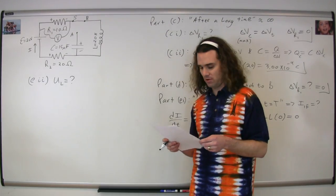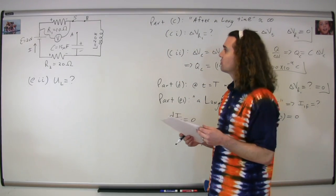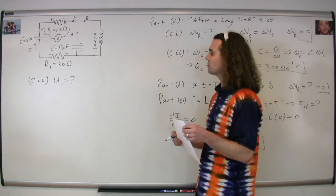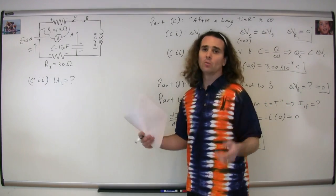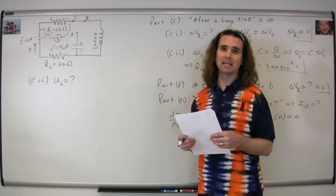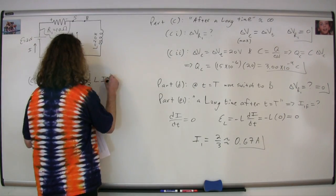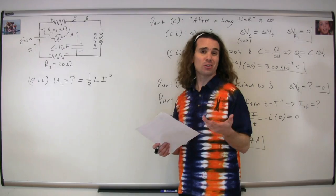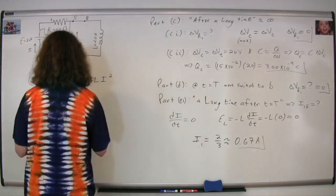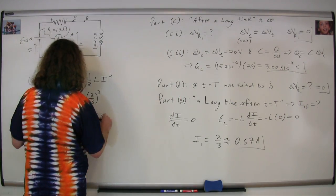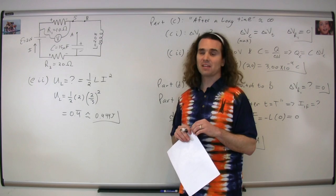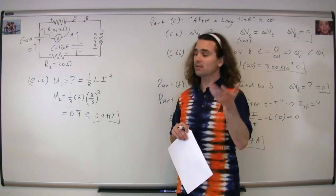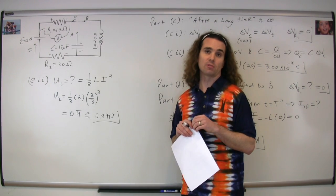Part E(ii): what is the energy stored in the inductor a very long time after we close the switch to position B? We use the equation for energy stored in an inductor: U equals one-half times inductance times current squared. That's one-half times 2 times (two-thirds) squared, or 0.444 joules.